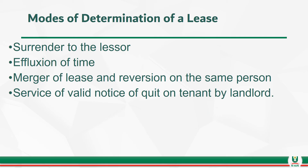Now let's talk about the modes of determination of a lease. A lease can be brought to an end — that's what we mean by determination — by surrender to the lessor. Where this option is taken, it must be in the same way in which the lease was created, so if the lease was created by deed, surrender must be by deed. Another mode of determination relates to timing: where the term of a lease comes to an end, the lease will be deemed determined — that is determination by effluxion of time. Where a lease and a reversion are merged onto the same person, the lease has come to an end — for instance, where the lessee buys off the interest of the lessor, there is no more lease. And the fourth mode is where a valid notice to quit is served on the tenant by the landlord, in which case the lease will also be deemed to have been determined.